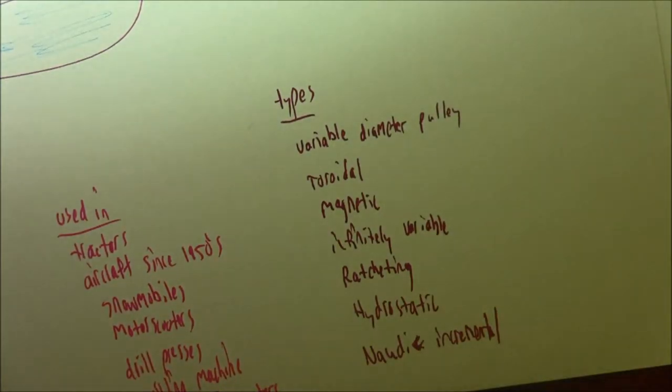There are many types of CVTs: variable diameter pulley, toroidal, magnetic which is fairly new, infinitely variable, ratcheting, hydrostatic, and naughty incremental. You can look that up.